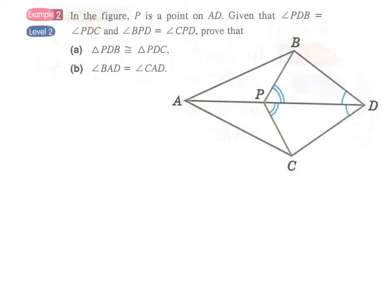Example 2. In the figure, P is a point on AD, and given that these two angles are equal, angle PDB and angle PDC, and angle BPD and angle CPD, these two pairs of angles are equal to each other. Prove that triangle PDB, this triangle, is congruent to triangle PDC.